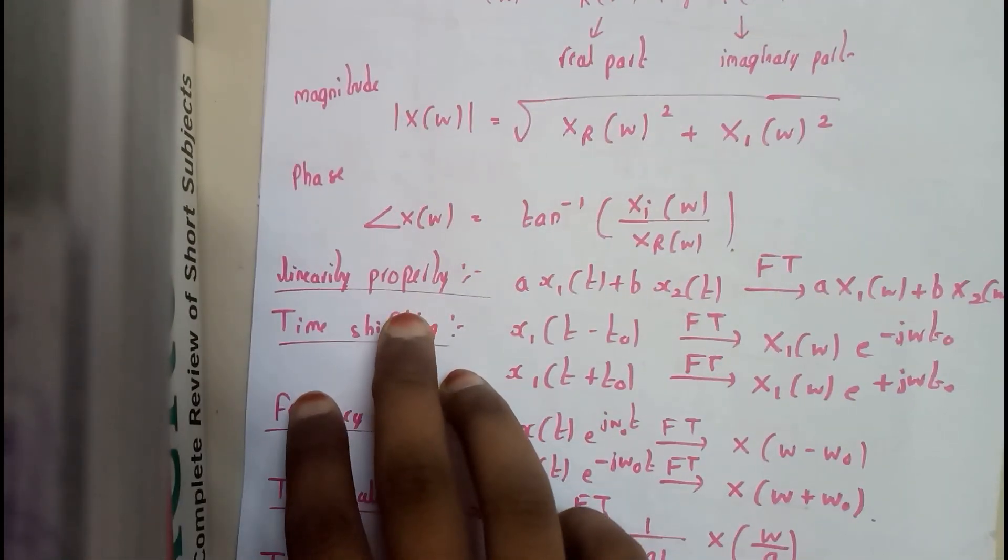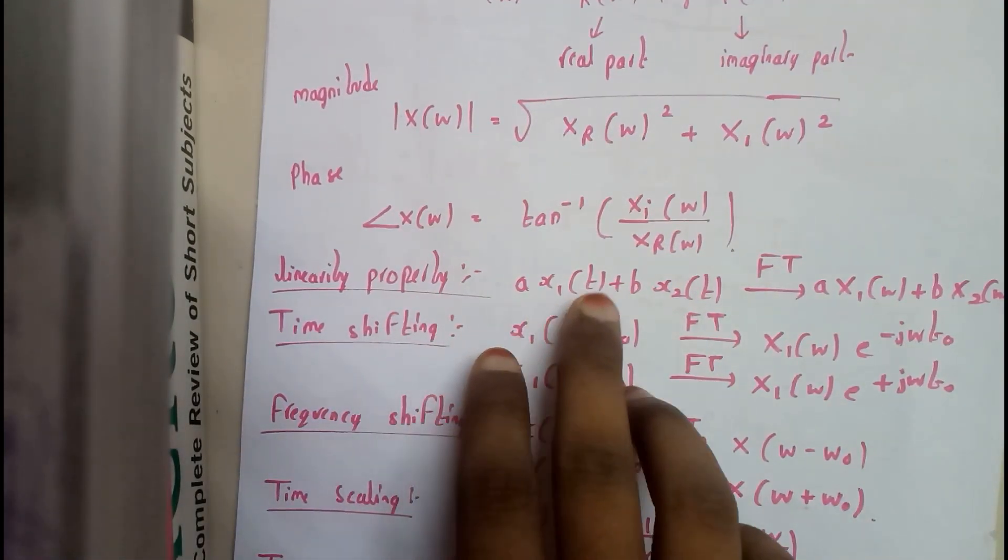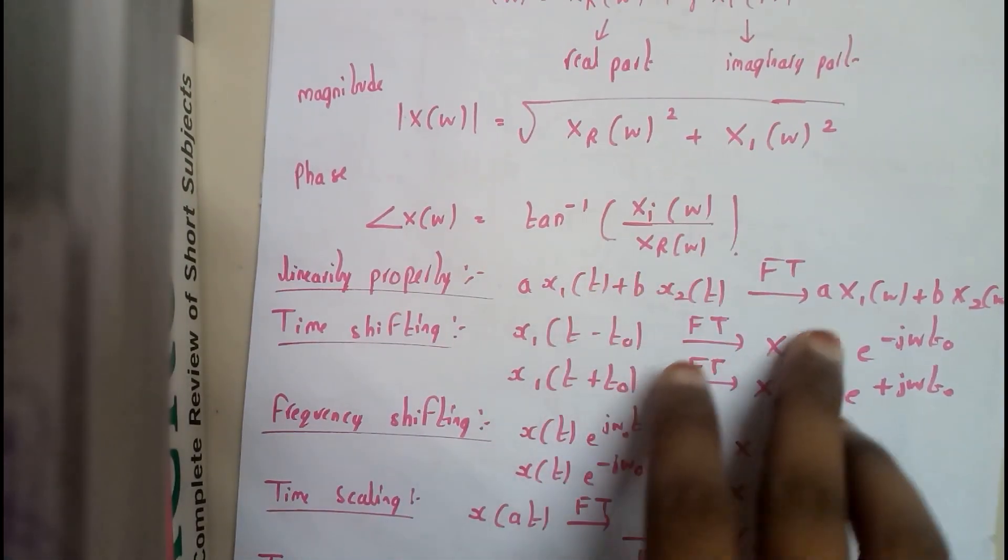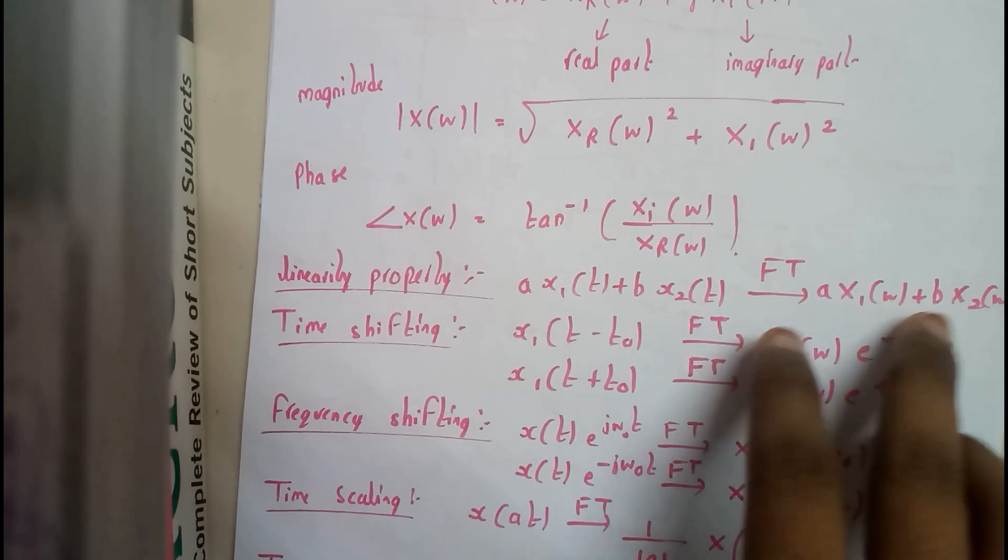Linearity property: a x1(t) plus b x2(t). When we apply Fourier transform for that we get a x1(ω) plus b x2(ω).